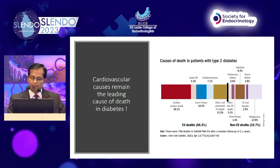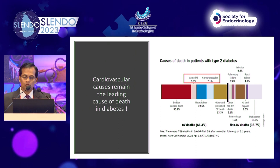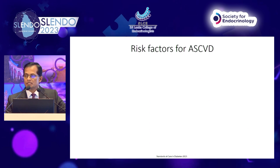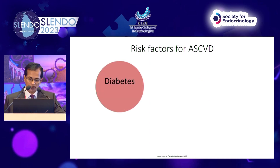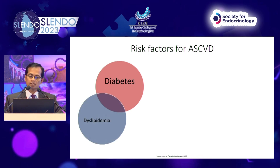If you look at the causes, sudden cardiac death accounts for about 30% in diabetes, acute MI about 5.3%, and cerebrovascular disease about 7.1%. Looking at risk factors for ASCVD, diabetes is a major risk factor, followed by dyslipidemia and hypertension.